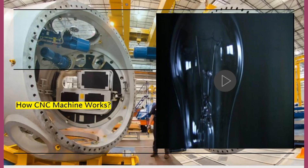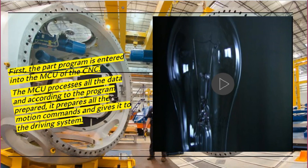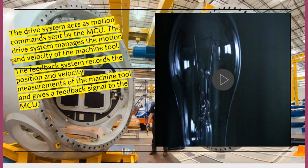How CNC Machine Works: First, the part program is entered into the MCU of the CNC. The MCU processes all the data and, according to the program prepared, it prepares all the motion commands and gives them to the driving system. The drive system acts on the motion commands sent by the MCU.